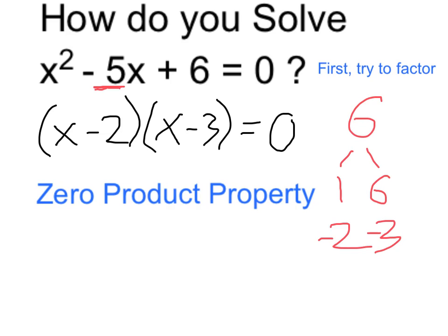And this allows us to use the zero product property, which tells us if the whole thing is 0, then either the first part is equal to 0, the x minus 2, or the second part, the x minus 3, is equal to 0.